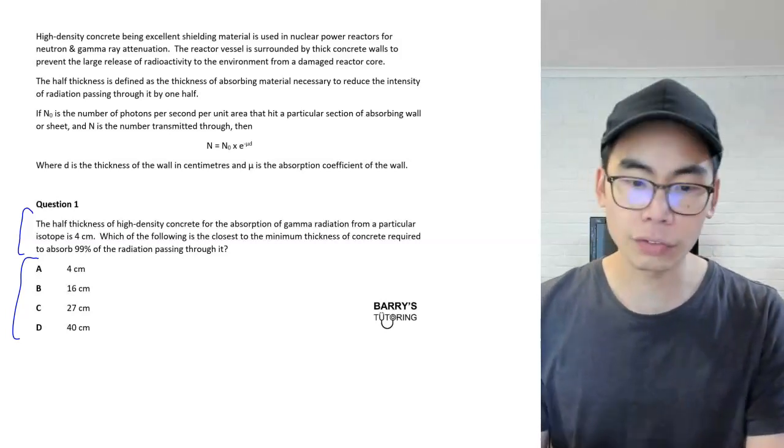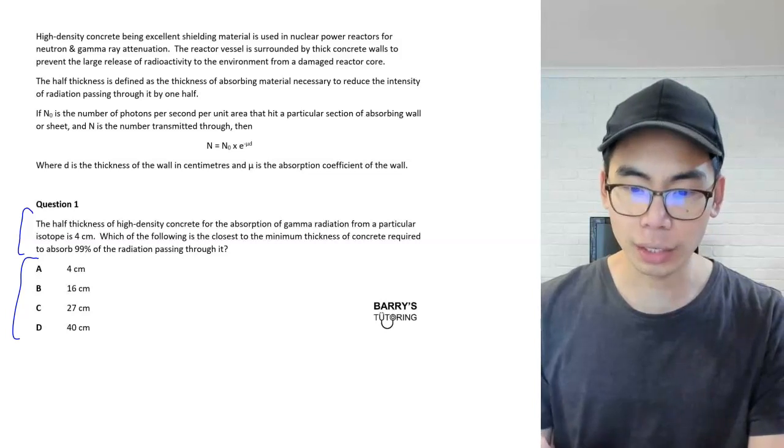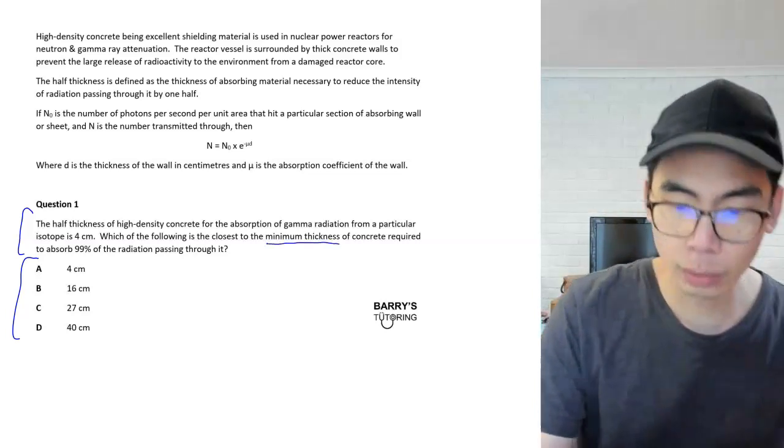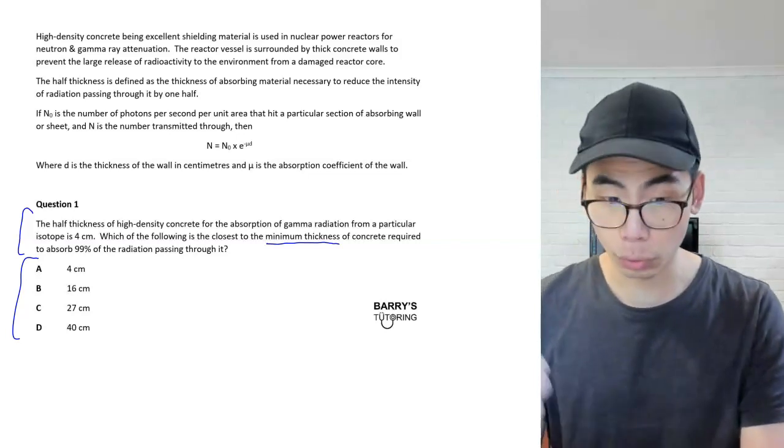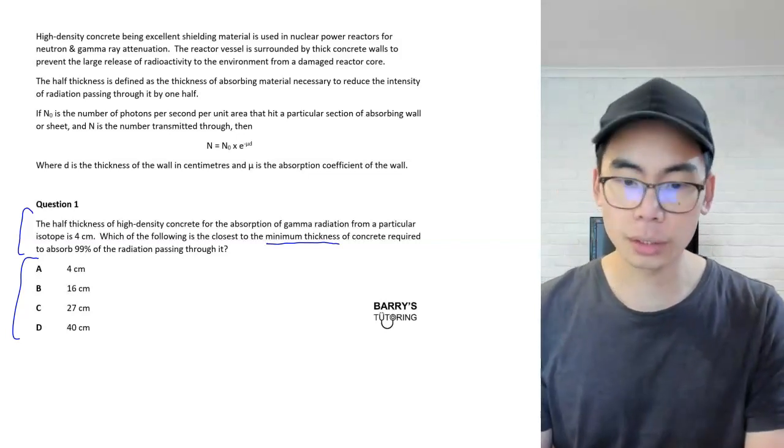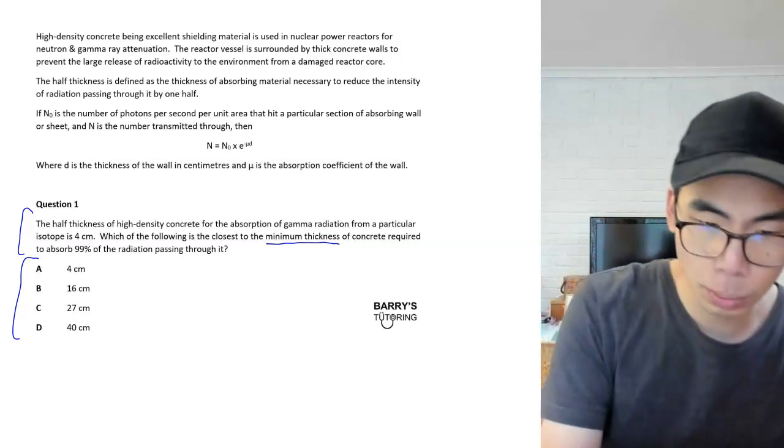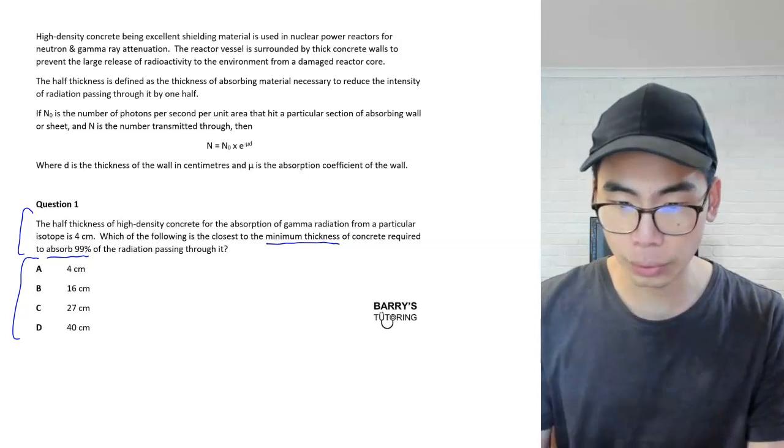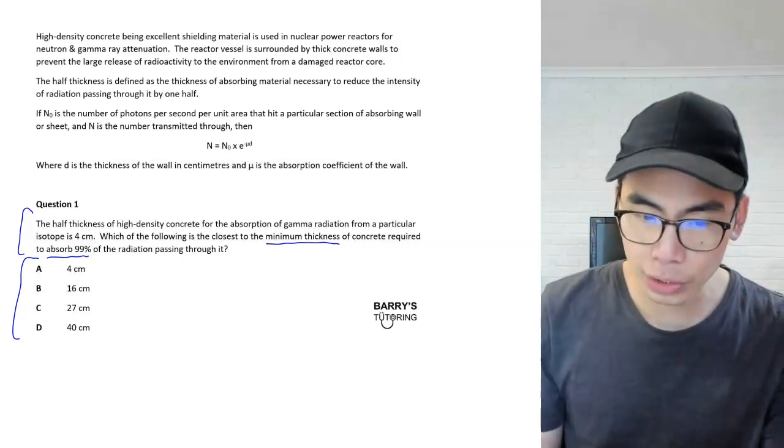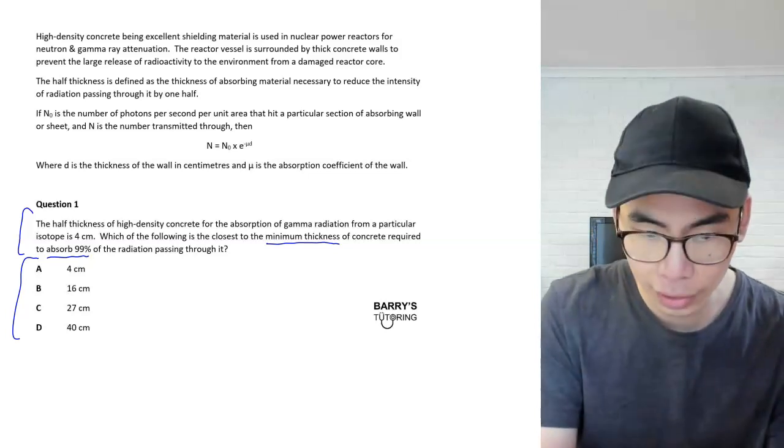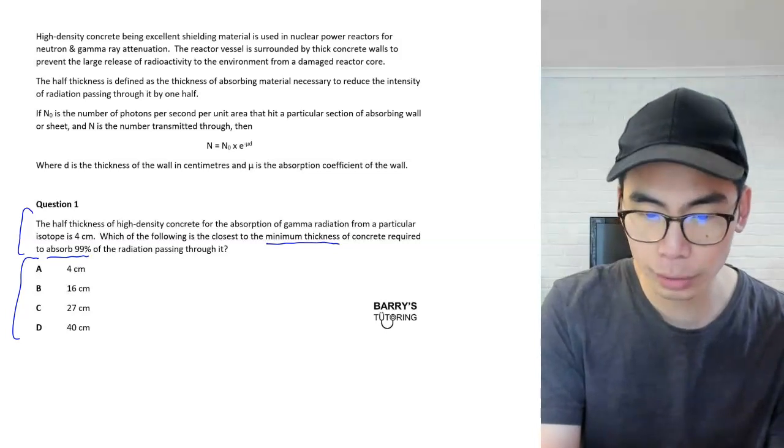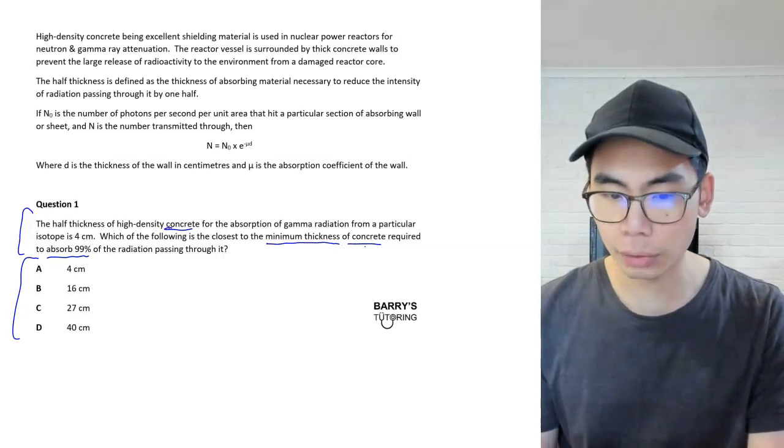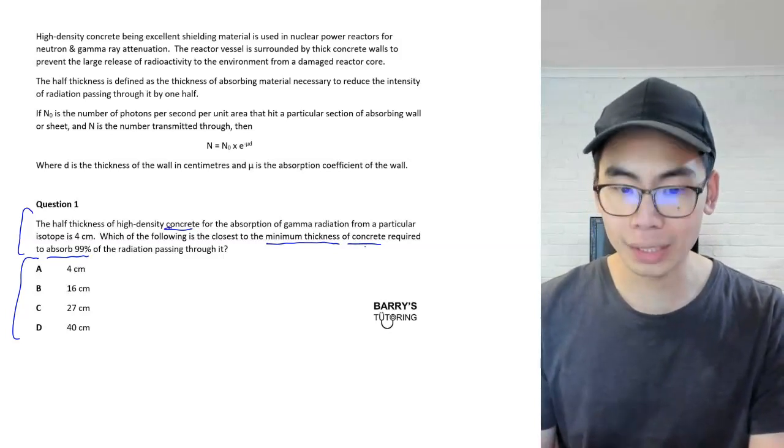So first of all, what are we trying to find? If you look at the wording, we are trying to find the minimum thickness. We're trying to find the minimum thickness of concrete required. The condition that is required here is to absorb 99% of the radiation passing through. We're given more information as well. It says that the half thickness of this concrete is important because obviously we're using concrete as the material. The half thickness of this concrete is four centimeters.